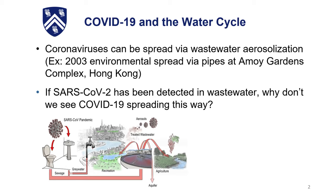But we really haven't seen it spread this way, and we were wondering why — especially when you look at how we reuse wastewater today. After it's treated, it typically goes to agriculture, recreational water bodies, and sometimes back into our aquifers. Additionally, many wastewater treatment plant workers have had to work through the pandemic and are exposed to these aerosols at the treatment plant all day.